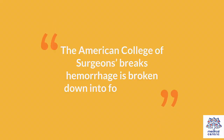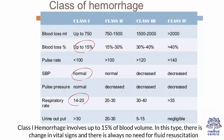The American College of Surgeons breaks hemorrhage down into four classes. Class I hemorrhage involves up to 15% of blood volume. In this type, there is no change in vital signs and there is generally no need for fluid resuscitation.